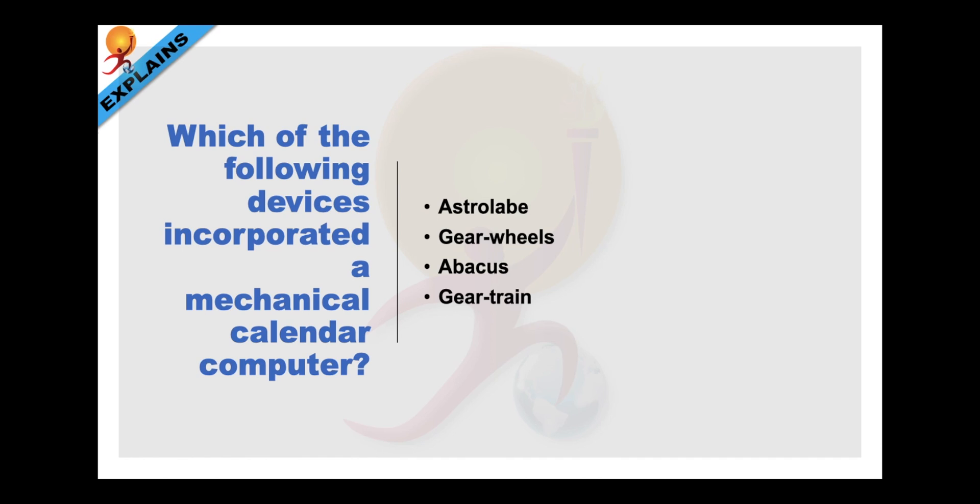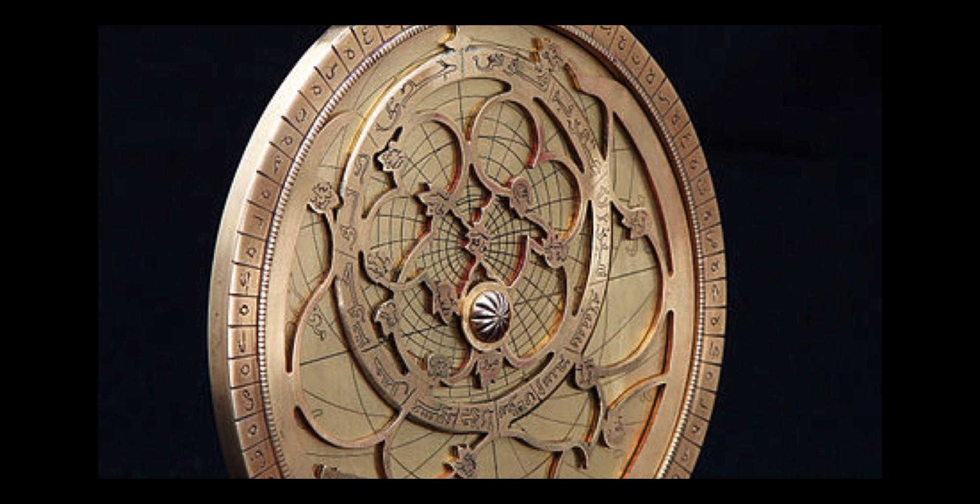Which of the following devices incorporated a mechanical calendar computer? The answer is Astrolabe. It was said to be invented in the Hellenistic world by Hipparchus. The Astrolabe incorporated a mechanical calendar computer and was used by astronomers and navigators to measure the altitude above the horizon of a celestial body whether it be day or night.